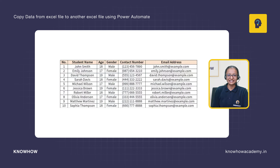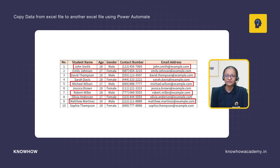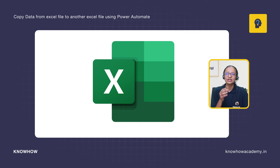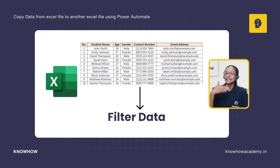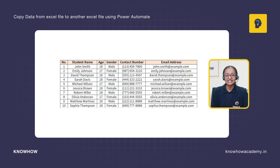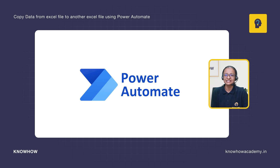Imagine you have a large student list in an Excel file and you need to manually filter out only the male student information and copy it into another Excel file. If you do this manually you open the file, filter the data, and copy-paste it — but this is boring, time-consuming, and with large data it may generate errors.